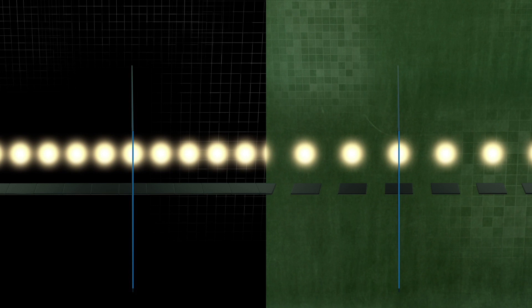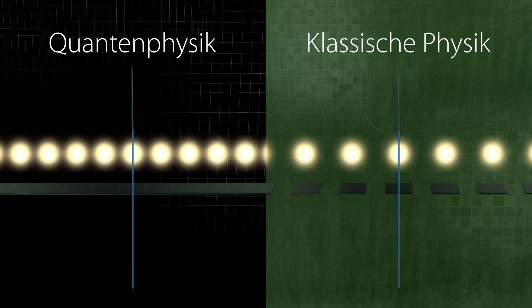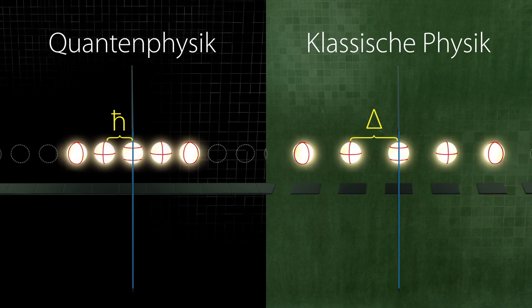Let's compare operators and states on the spherical surface in quantum physics with those in classical physics. In quantum physics, the distance between the states is a universal physical constant. In classical physics, it is random.